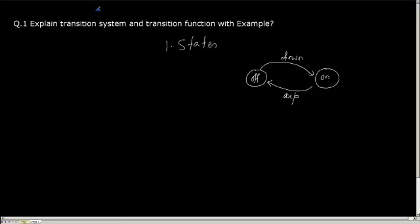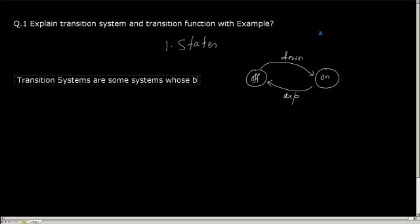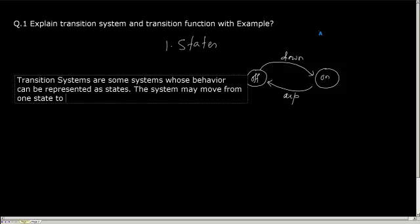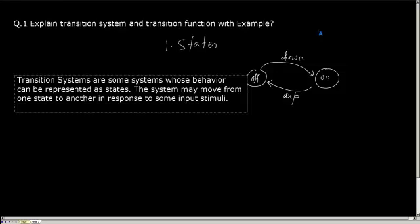So I can define transition systems as systems whose behavior can be represented as states, and the system may move from one state to another in response to some input stimuli. This switching of a transition system from one state to another is called a transition.